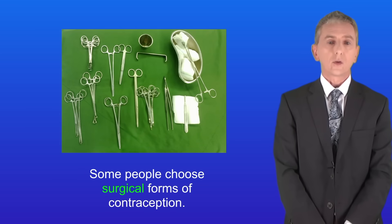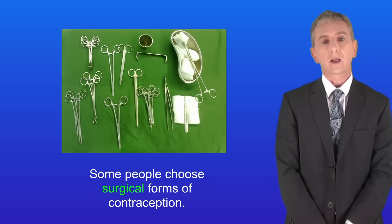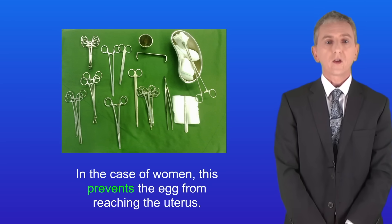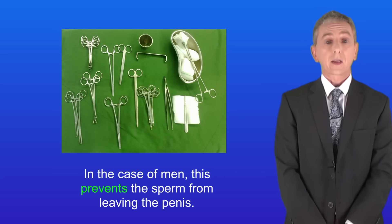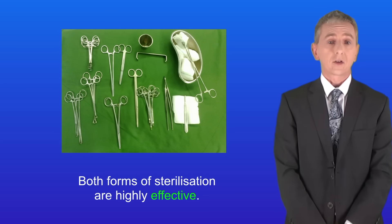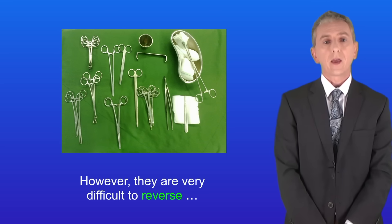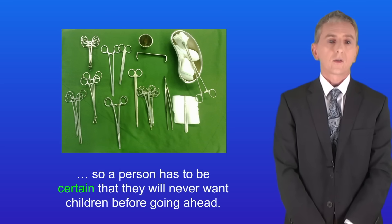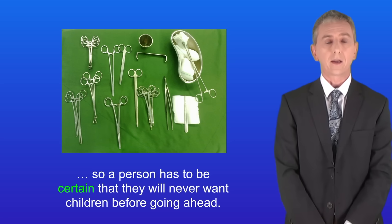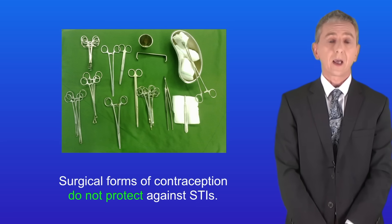Some people choose surgical forms of contraception, which is called sterilization. In the case of women, this prevents the egg from reaching the uterus; in the case of men, this prevents the sperm from leaving the penis. Both forms of sterilization are highly effective, however they are very difficult to reverse, so a person has to be certain they'll never want children before going ahead. Surgical forms of contraception do not protect against STIs.